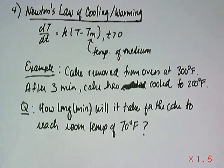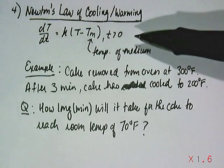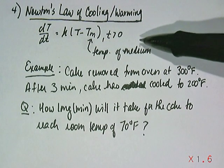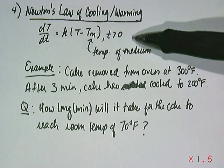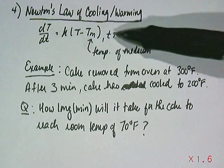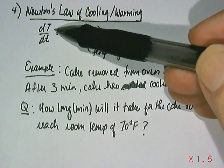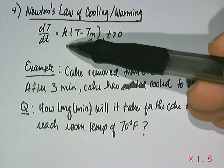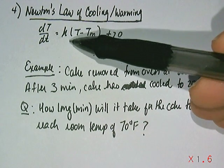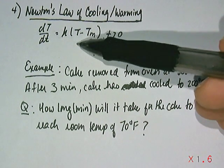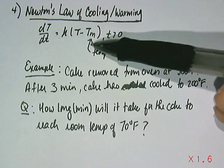The fourth application of linear models we're going to consider involves Newton's law of cooling and warming. You'll recall that the law has this particular form where capital T represents temperature, little t represents time, and the change of temperature with respect to time can be modeled as a constant of proportionality k times this difference.